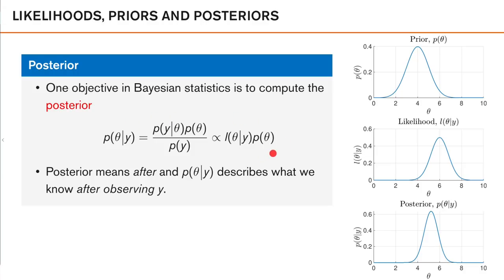Let's look at a small toy example where we have a scalar theta and a scalar observation y. Theta could be the distance to an object and y could be a measurement from a radar sensor. We have a prior on theta saying theta should be around 4, with some spread indicating uncertainty. Additionally, the observation indicates theta should be around 6 — the most likely value according to our observation alone is 6 — but we have some uncertainty in our measurement, as the likelihood indicates it's fairly likely that the value is between 4 and 8.